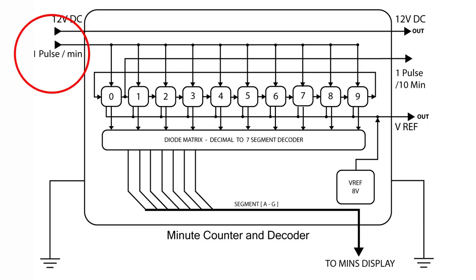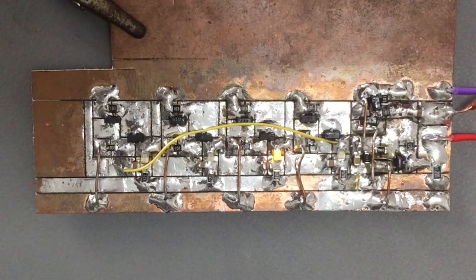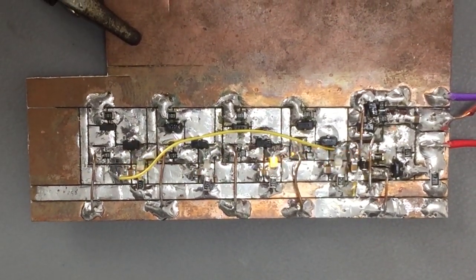The minutes counter is the first stop in the counter chain. It counts directly in decimal and uses a diode matrix to map the output. This board also contains an 8-volt reference generator that's used by all the other counter boards. Let's have a look. The counter boards are by far the most difficult to fabricate. They have a lot of parts and are quite complicated.